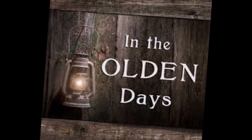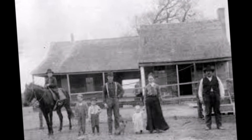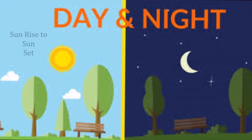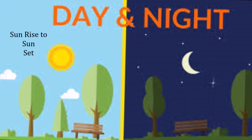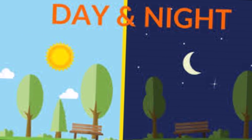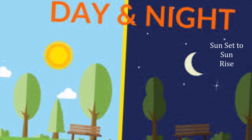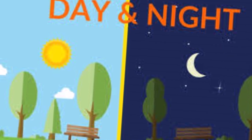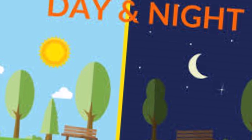Now, what would people do in the olden days to measure time? In the olden times, they divided a day into two parts. From sunrise to sunset, they called it daytime, and from sunset to the next sunrise, it was called night time. A whole day meant the duration from one sunrise to the next.